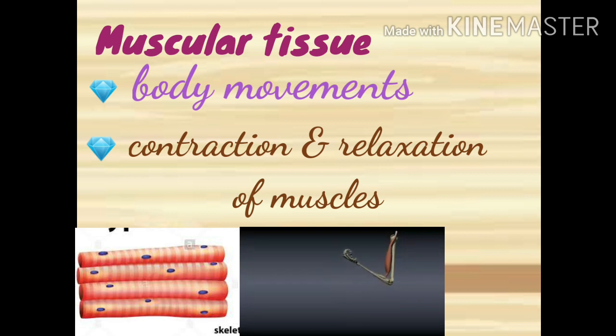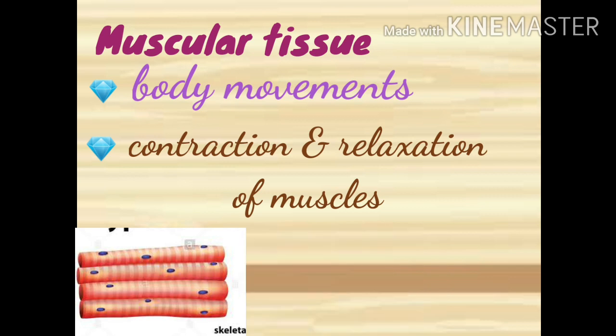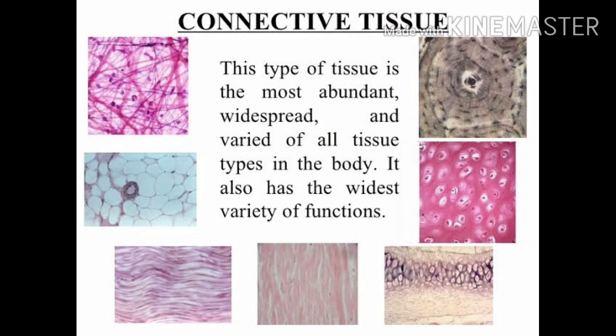Muscular tissue can contract and regain its original state, enabling body movements. When muscles relax, they return to their original state. Our body also needs tissues to hold things in place — that is connective tissue.